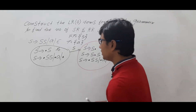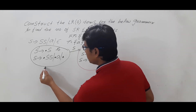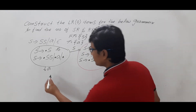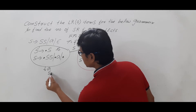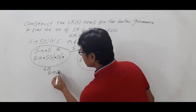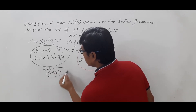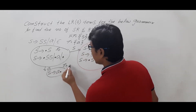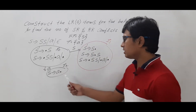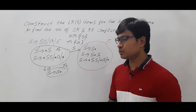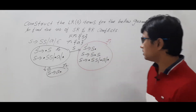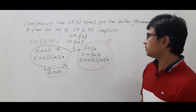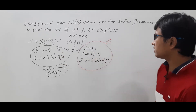On A, I0 on A will be S → A•. This is my item number I2. After the dot nothing is there, so I need not compute the closure. So I1 and I2 came from I0.